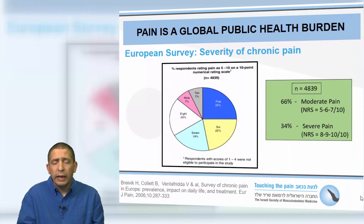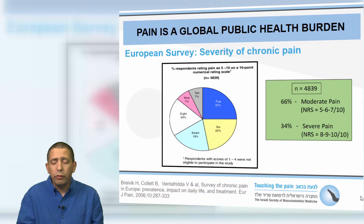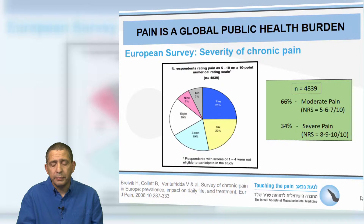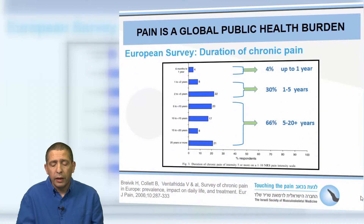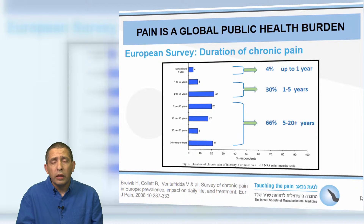In the same survey, when checking the severity of chronic pain, two-thirds had moderate pain with an NRS of 5, 6, or 7 out of 10, and one-third had severe pain with NRS of 8, 9, or 10. Regarding duration, only 4% had relatively short pain up to one year, while more than two-thirds had what we call ultra-chronic pain — 5, 10, or even 20 years of pain and suffering.